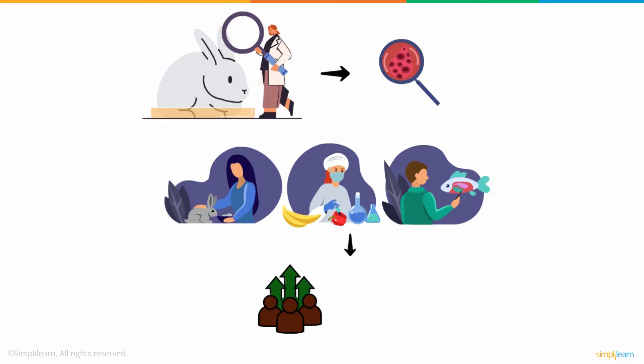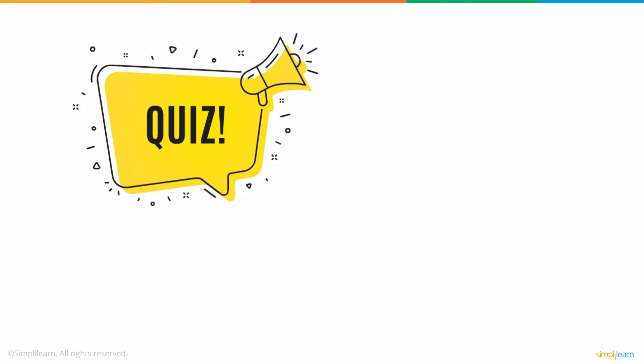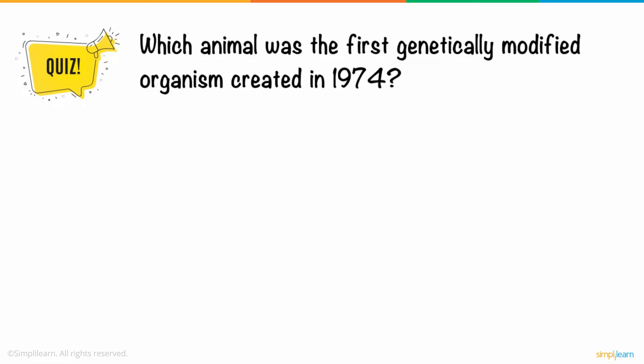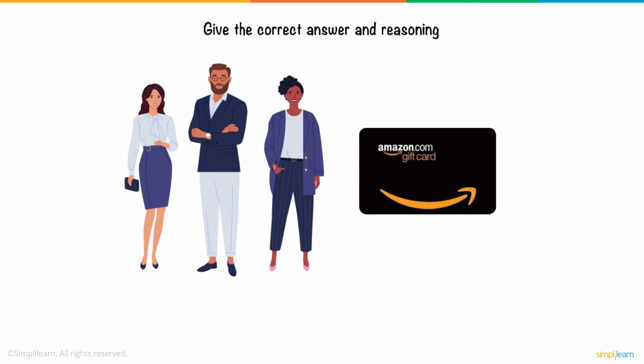So, here is a question for you. Which animal was the first genetically modified organism created in 1974? One, mouse. Two, cat. Three, frog. Give the correct answer and reasoning and stand a chance to win an Amazon voucher.